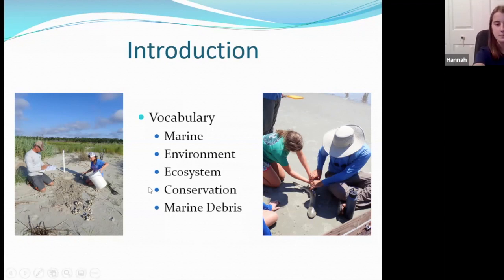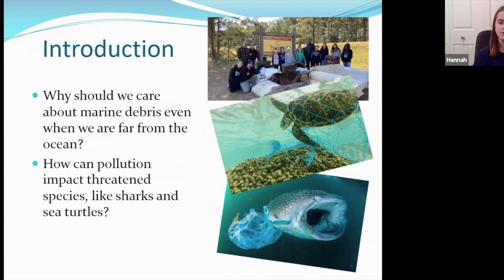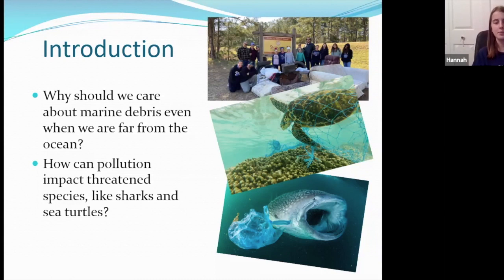So just to start off, I'll answer a few questions. Why should we care about marine debris even when we are far from the ocean? In some places, especially where I live, we're a little far from the ocean, and so it's a wonder — why does our stuff impact what happens at the ocean? The answer is that all water, when it rains, eventually goes to our oceans. The rivers eventually lead to the oceans, and so does our plastic. So if we throw something out, it will eventually make its way down to our oceans.